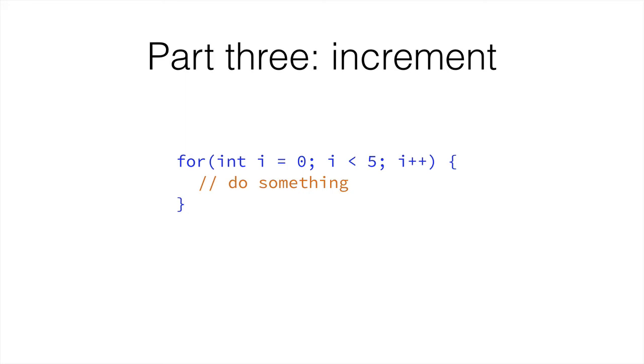However, you need to remember the three parts and the order in which they go. First of all, we define the variable that we're going to use as an index. We initialize it to the value we want. It doesn't have to be zero if we don't want.